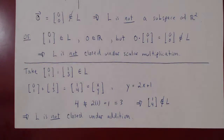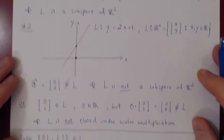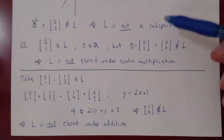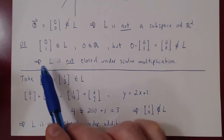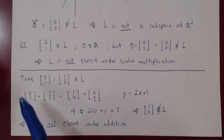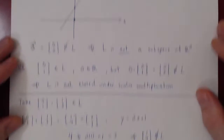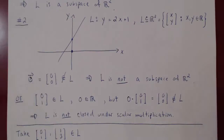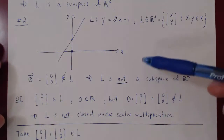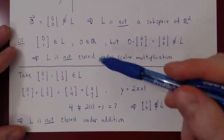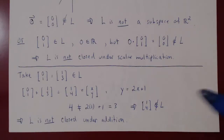In this case, both closure axioms failed. I showed you both just to give examples of how to construct a counterexample for failure of closure under scalar multiplication and failure of closure under addition. Keep in mind: whenever you are trying to prove something is a vector space using the subspace theorem, as soon as one axiom breaks down, you can stop — what you have is not a subspace. Here it was dramatic because L was simultaneously not closed under scalar multiplication and not closed under addition.